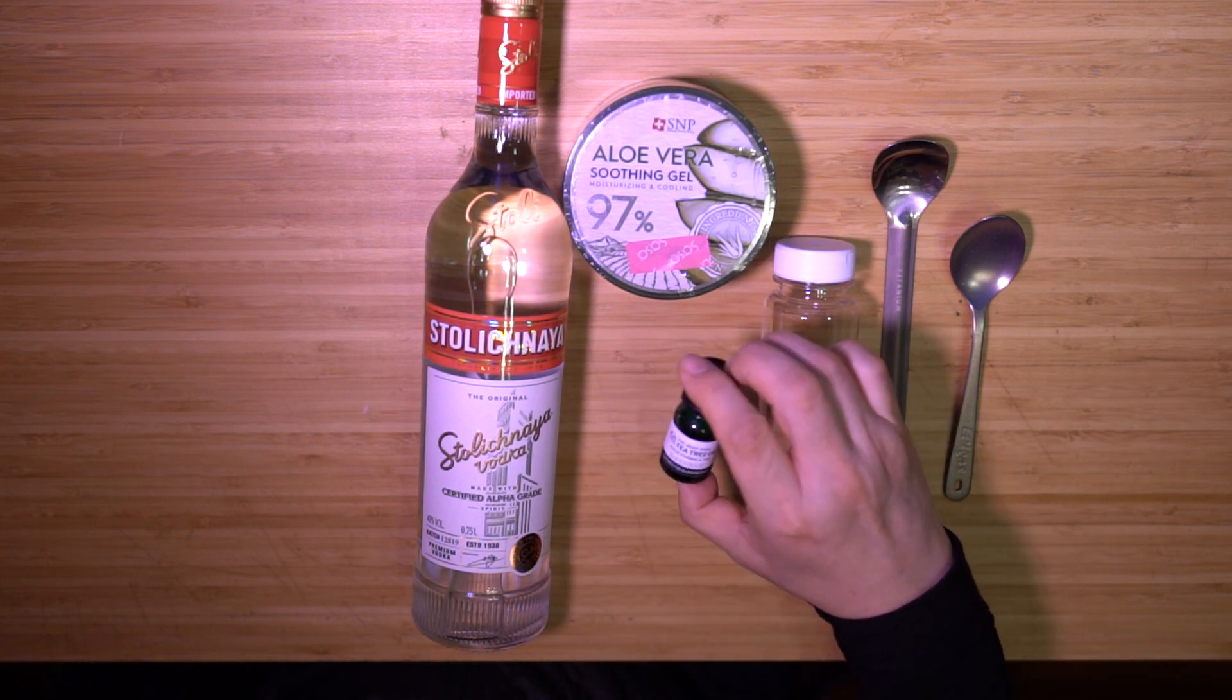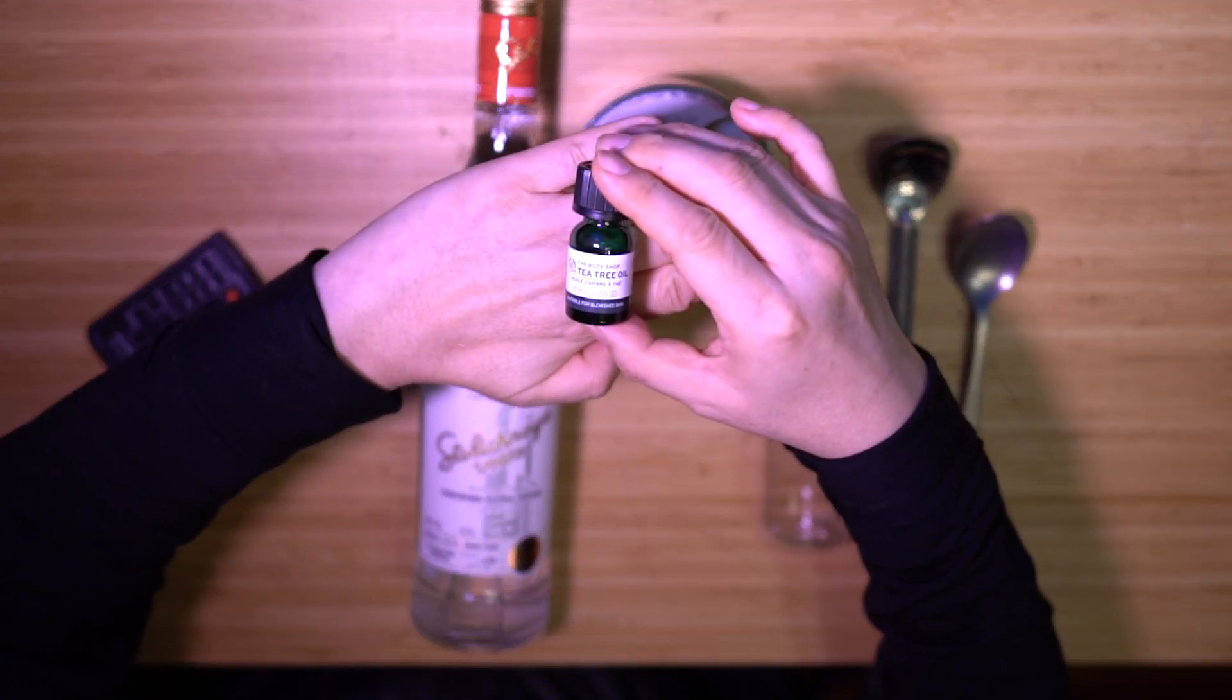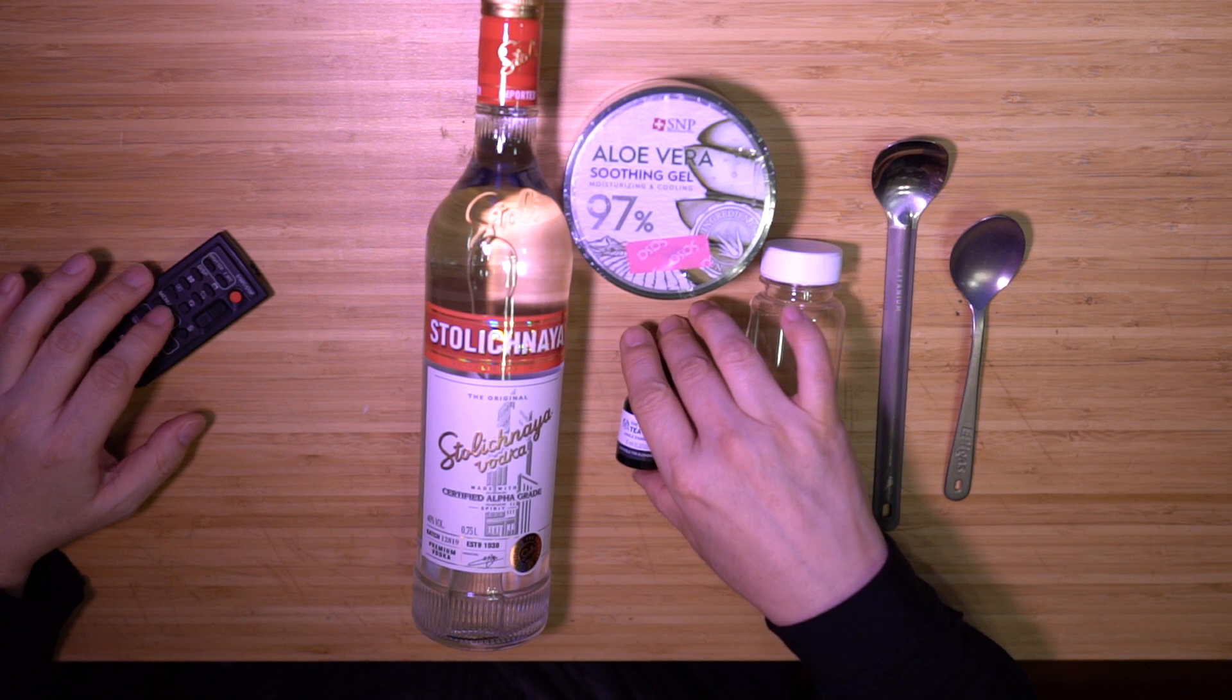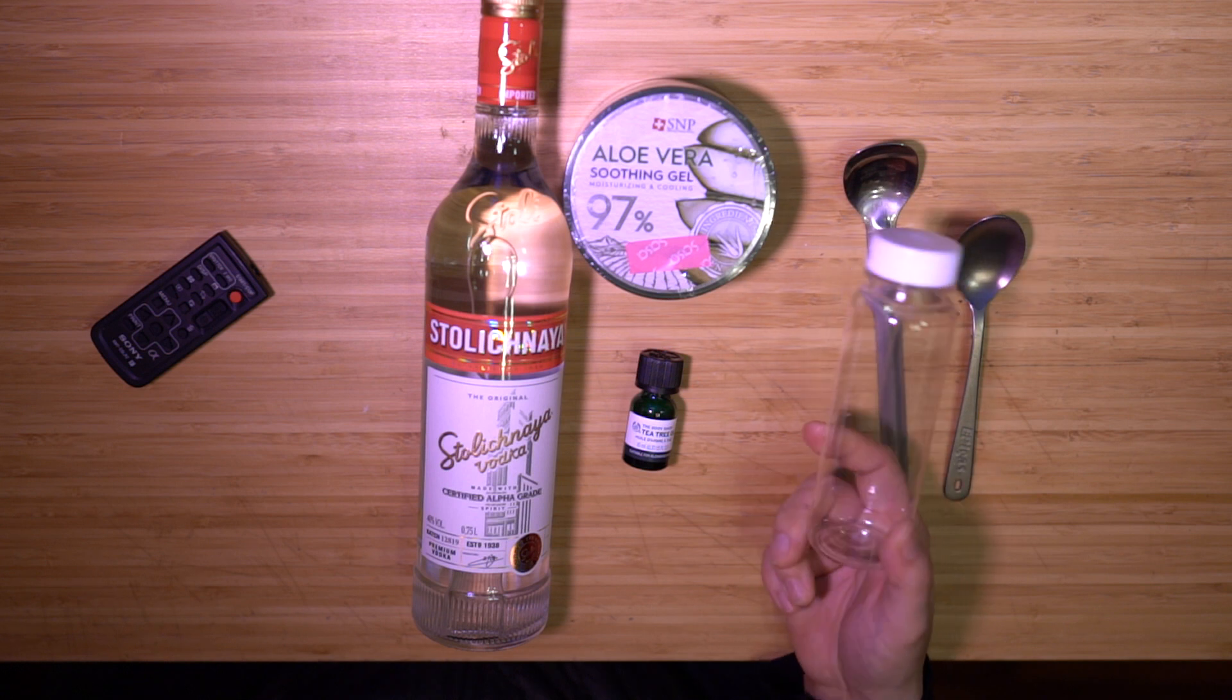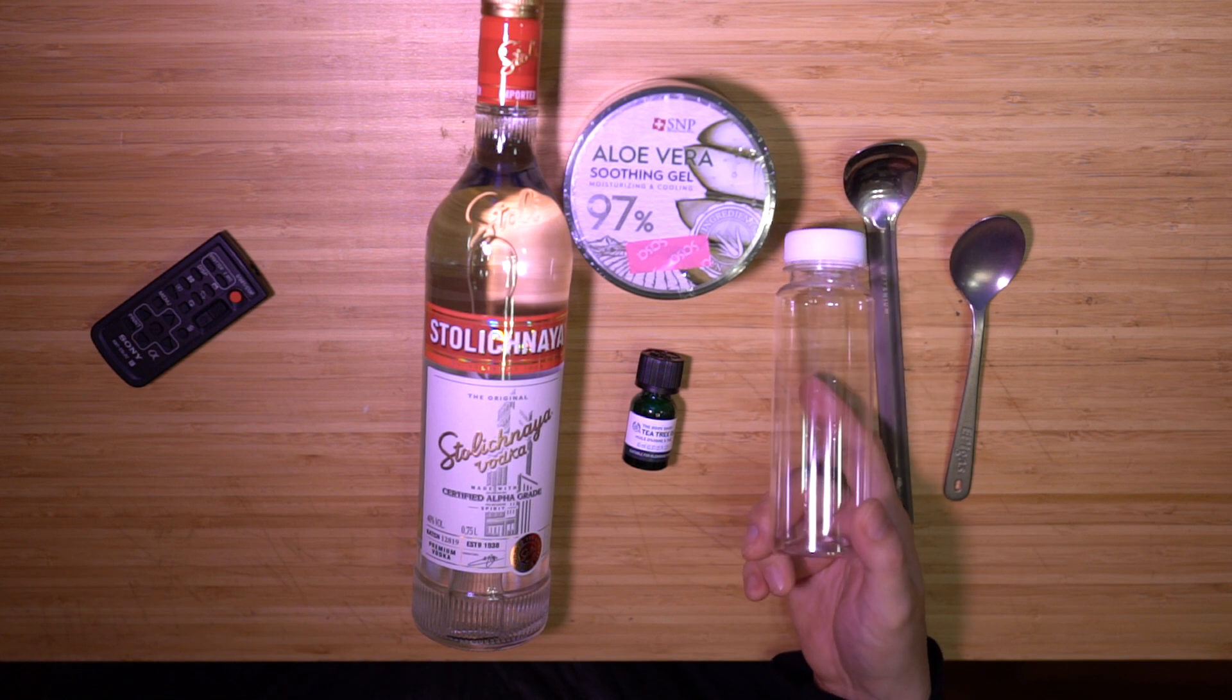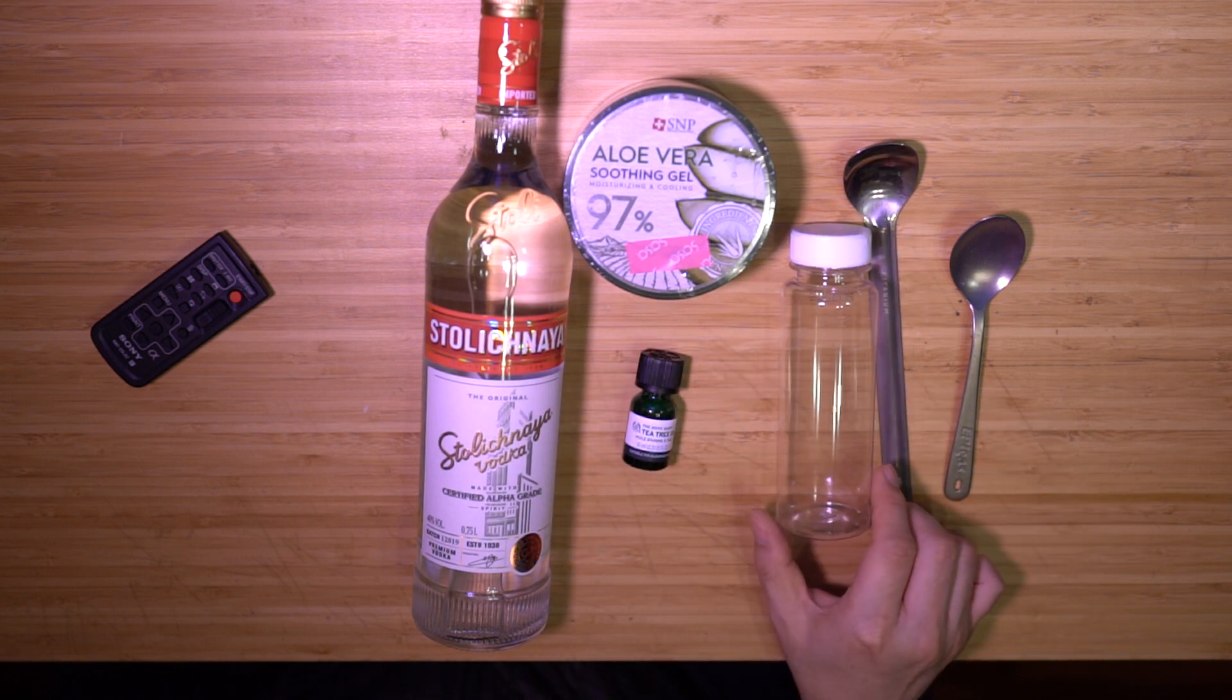And I went to the body shop and I got this tea tree oil. From what I read, I heard that this has antiseptic properties. And this is just the recycled drink container that I saved. It's pretty hard, so I thought it could be used for some purpose. And combining these three ingredients, you can make a pretty effective hand sanitizer.